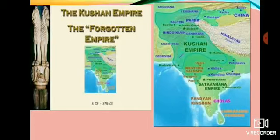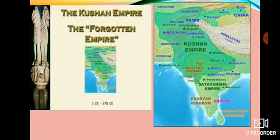The Kushans were a nomadic tribe of northwest China or Tajikistan. They were driven out of their homeland by the Huns, and as a result moved eastwards, arriving in Afghanistan in the first century CE. The Kushanas were very dynamic. Like the Indo-Greeks, Parthians, and Shakas, the Kushans adapted well to the Indian climate and made this country their home. They followed Buddhism and spread Indian culture to West and Central Asia.